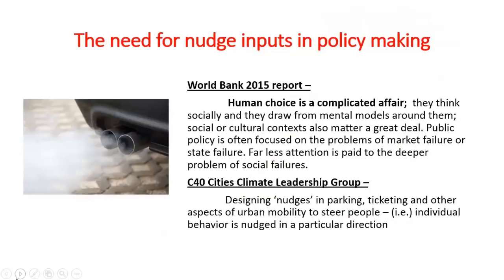The World Bank report says that human choice is a complicated affair — humans think socially and draw from mental models; social and cultural context matter a great deal. Public policy is often focused on problems of market failure or state failure, but less attention is paid to the deeper problem of social failures. Policy making is not looking into failures happening in the social setup, but rather focused on failures of market and state.